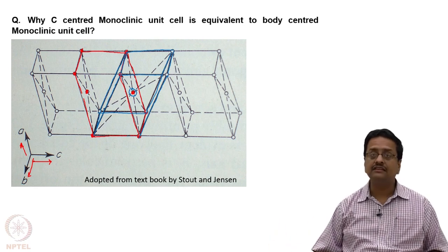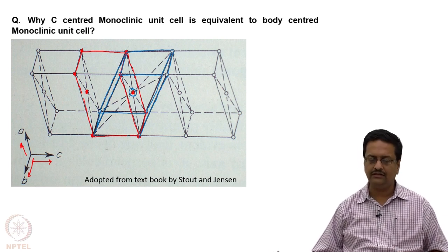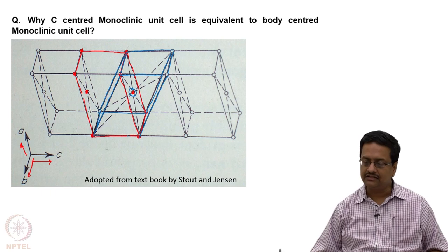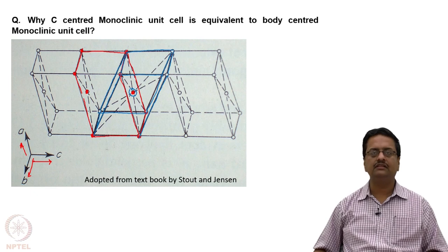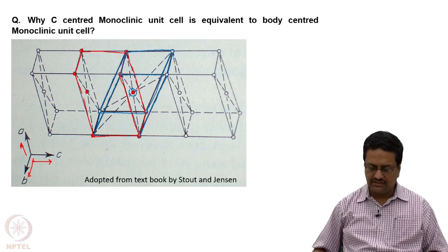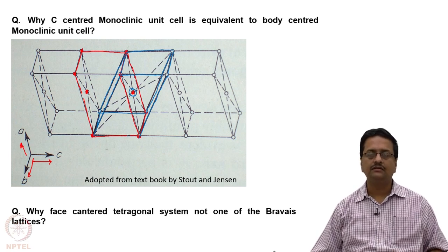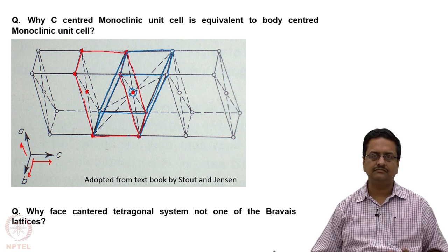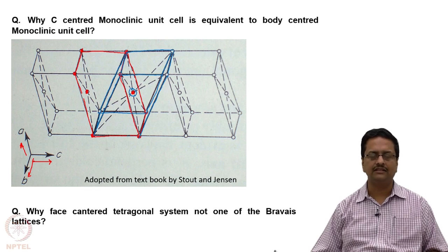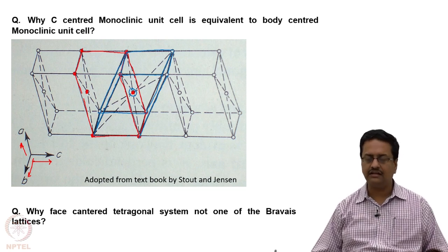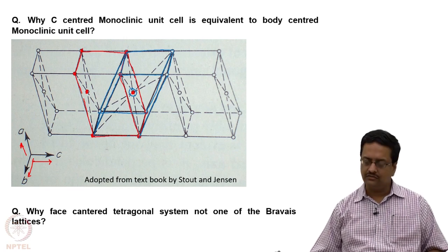This particular picture is adapted from the textbook of Stout and Jensen. If you go and read the textbook, you will find this figure and the explanation there. In association with this understanding, I would like to give one question to all of you: in the case of the tetragonal lattice, we have indicated that there is only a tetragonal body-centered lattice or tetragonal primitive lattice, but we do not have a face-centered tetragonal as one of the Bravais lattices. We would like you to find out the reason behind that.